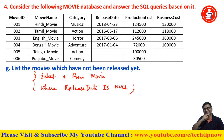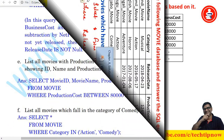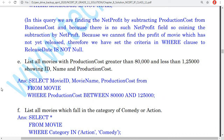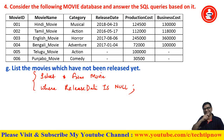This is a good stopping point so the video doesn't get too long — this covers the solutions for the first set of questions. The next questions will be covered in the next video. One more question here: list all movies with production costs greater than 80,000 and less than 1,25,000. We use the BETWEEN operator: SELECT * FROM movie WHERE production_cost BETWEEN 80000 AND 125000. We will see the remaining solutions in part two.